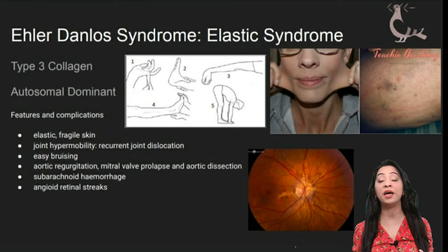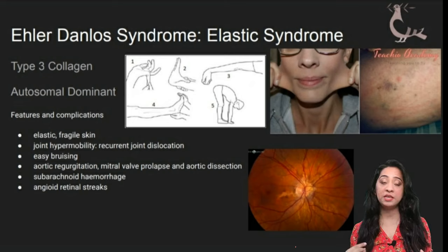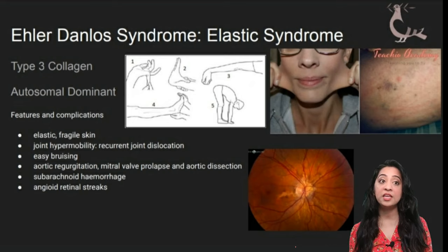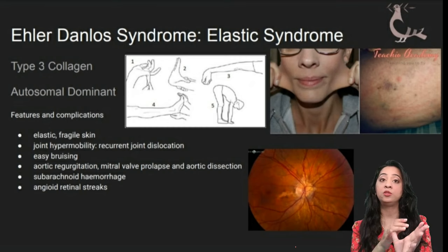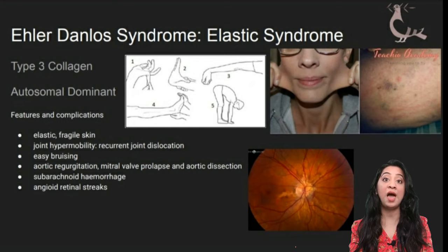The way I try to remember Ehlers-Danlos syndrome is by the term 'elastic syndrome' — E for elastic. This is someone with defective collagen — specifically type 3 collagen in Ehlers-Danlos syndrome. Because collagen is defective, the skin is very elastic and fragile. The joints also have a lot of collagen, so this individual will have joint hypermobility — as seen on screen, they can bend fingers backwards, take their thumb to their wrist, turn their elbows backwards, and spread their hands flat on the ground.